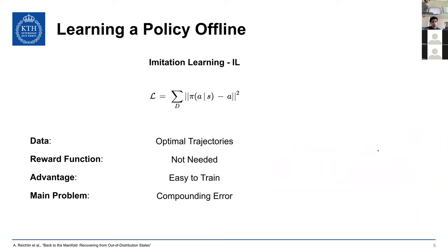To learn a policy fully offline, there are two families. The first is imitation learning, which formulates the cost J through a supervised learning loss. It assumes access to an optimal agent, and the policy pi, given states sampled from the dataset, should resemble the actions of an optimal trajectory as closely as possible. This has the advantage of not requiring a reward function and is easy to train, but it suffers from the compounding error problem, which I'll discuss more shortly.